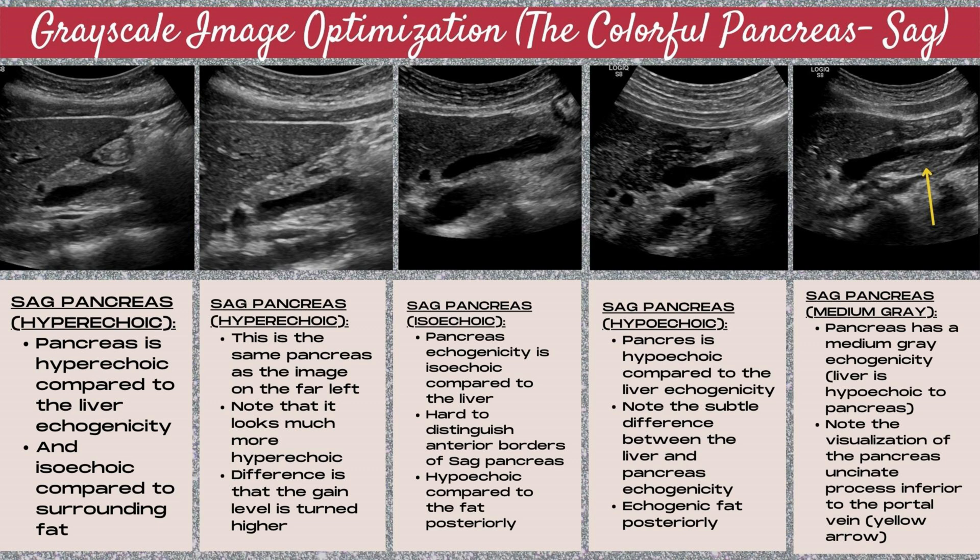Note that the pancreas looks much more hyperechoic — the difference between these two images is the gain level. The gain level can also affect how bright the echogenicity of the pancreas appears. The middle image shows a sagittal isoechoic pancreas; the pancreas echogenicity is isoechoic compared to the liver, and we see the pancreas lying anterior to the portal vein and SMV. It's hard to even delineate where the borders of the pancreas versus the liver are.